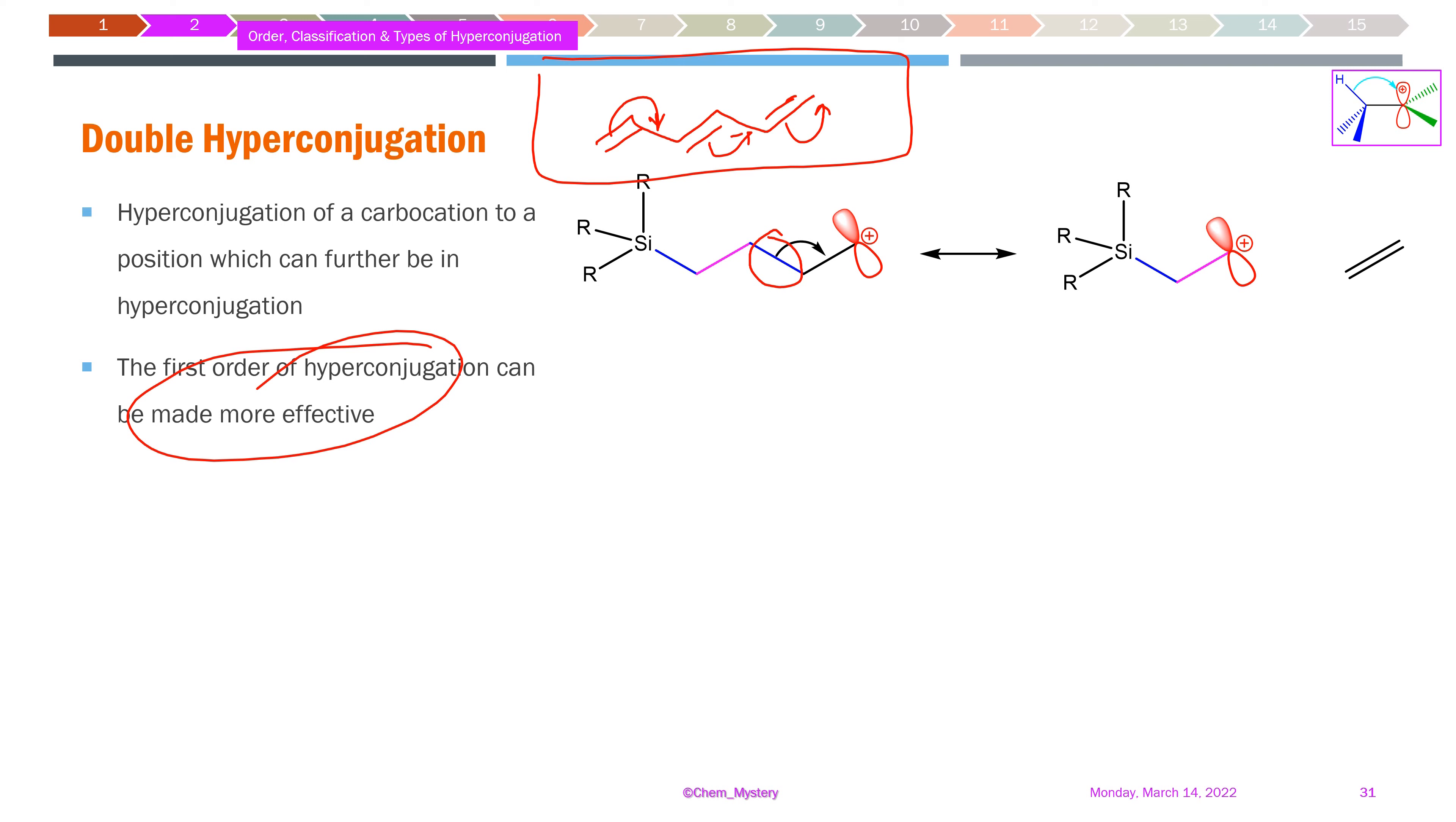When this hyperconjugation occurs, we obtain a structure where an alkene is formed. This fragmented part forms an alkene, specifically ethene.